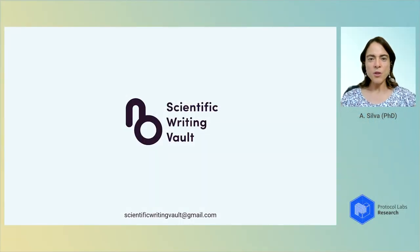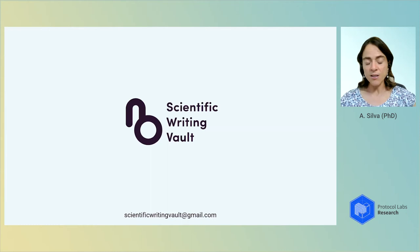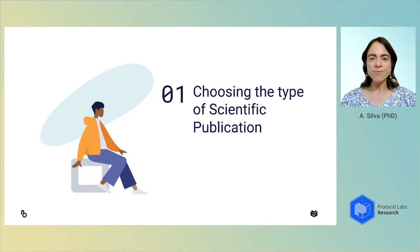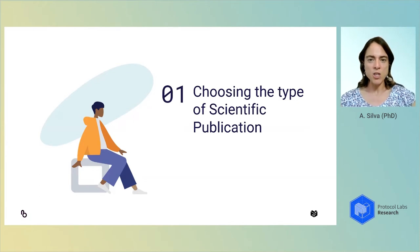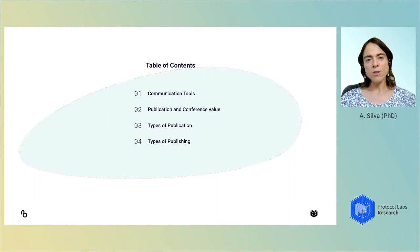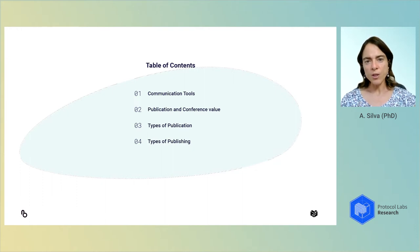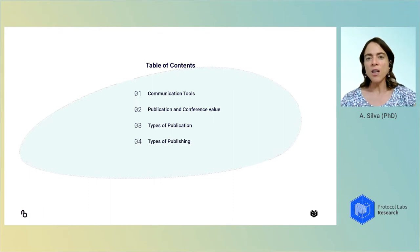Welcome everybody to our third video from the collaboration between Protocol Labs and my brand, Scientific Writing Vault. My name is Ana Silva, and today we're going to be looking at some important concepts and the knowledge you need to have in order to choose the correct type of scientific publication. Most researchers, no matter the type of research they do, are very much pushed toward the traditional scientific paper published either in conference proceedings or journals. But today we're going to look at all the different options, their characteristics, and how to choose the correct one depending on our intention and type of research.